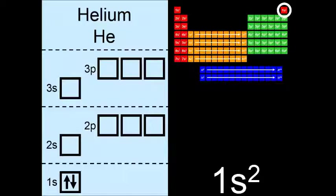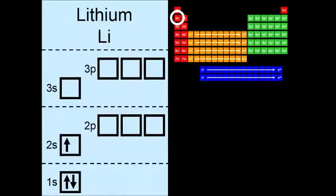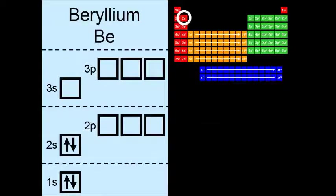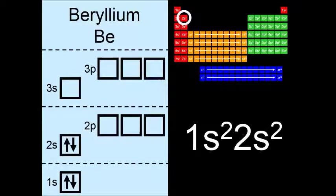So now that we have finished with the first period of the periodic table, we have the elements from lithium all the way to neon. So lithium's configuration is 1s2 2s1. And beryllium is 1s2 2s2.